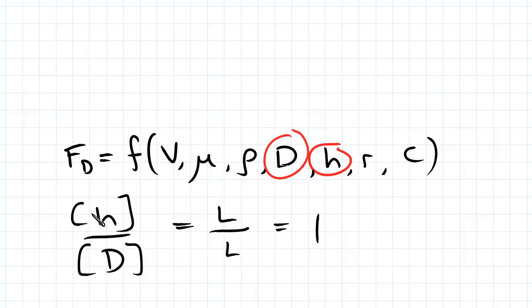So right there I've created a valid pi group and you can do this for all our pi groups as long as they are independent and we end up with the number of pi groups that we're supposed to, which is k-r.